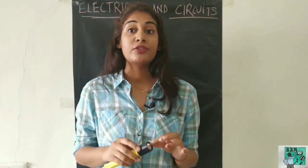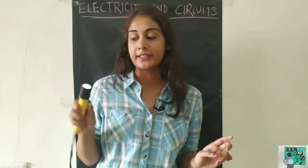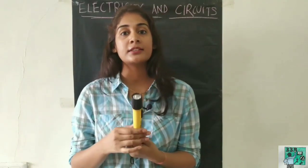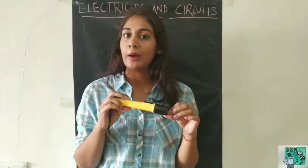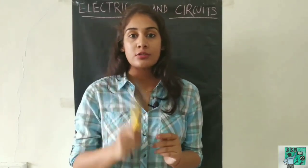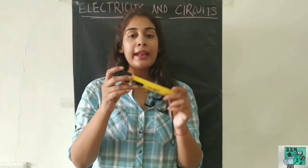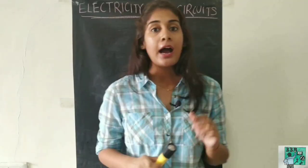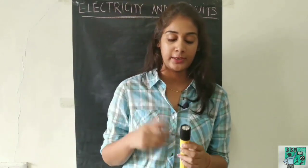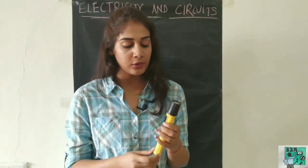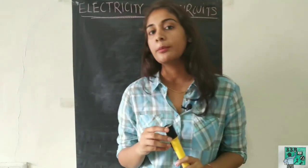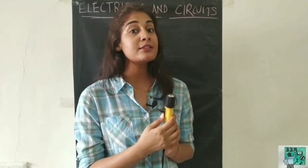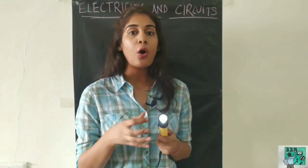For the torch, there is a bulb which lights up when we slide the switch. There are three important components in the torch. The first important component is the bulb. When we slide the switch, this bulb glows, and because of it, there is light and we can see something.